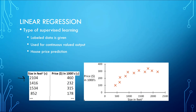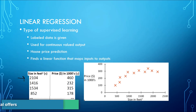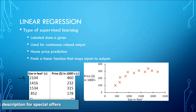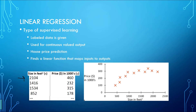The goal of Linear Regression is to find a linear function that maps our inputs to the outputs. That is, we want to find a function to which if we feed our input — the size of a house — that function would return the price of the house.